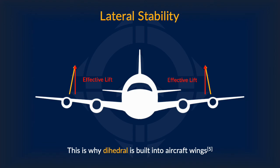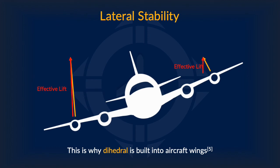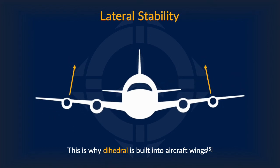That is why a dihedral is built into an airplane. Dihedral basically means that an airplane's wings are angled slightly upwards, which you can already see here with our model. This adds a horizontal component to the lift vector, and only the vertical component provides lift. In the event of a sudden roll, the inner wing's horizontal component decreases while the outer wing's horizontal component increases, meaning the inner wing's vertical component increases while the outer wing's vertical component decreases. This allows an aircraft to self-correct much more easily.